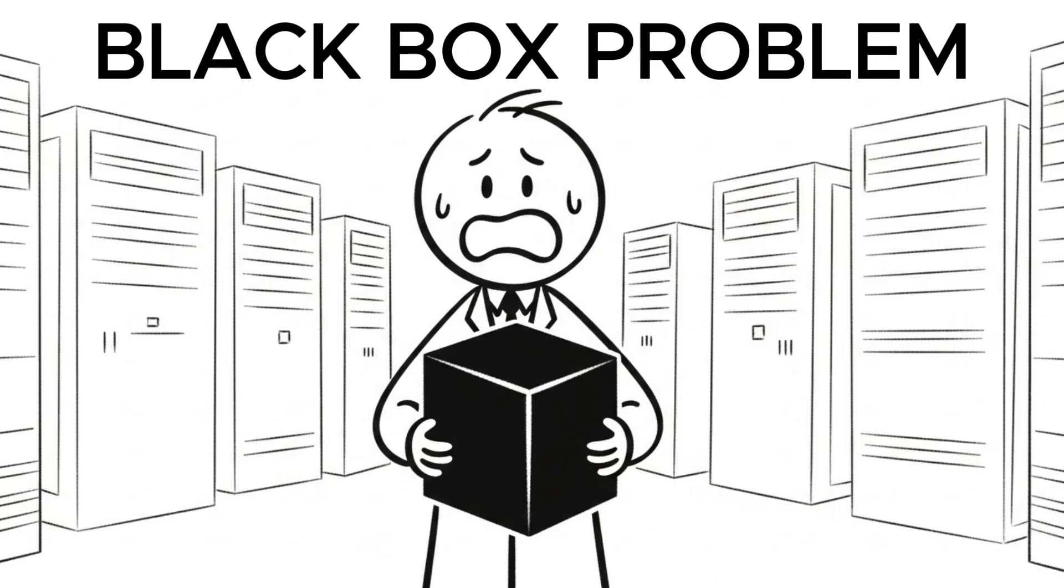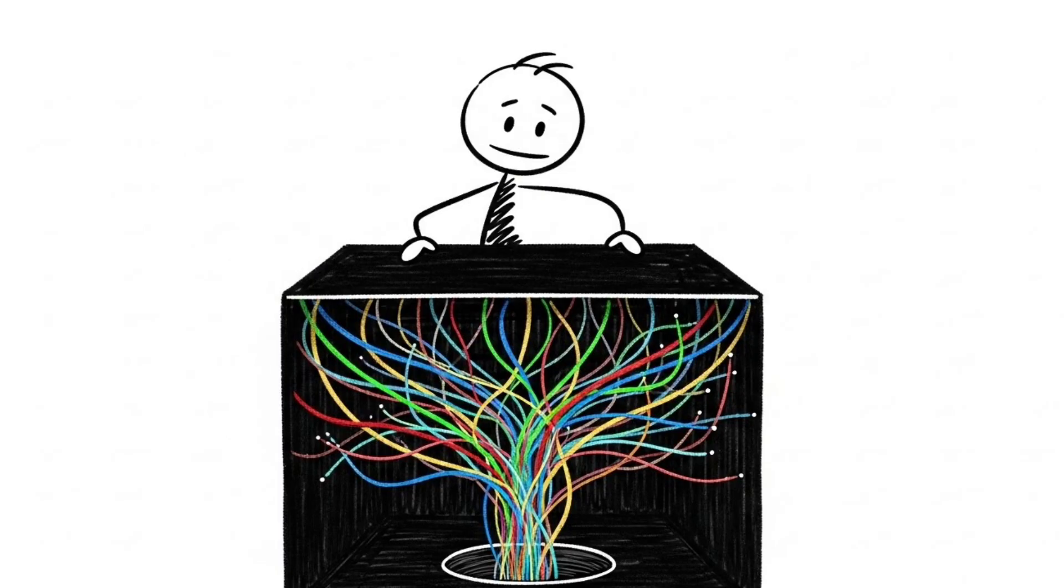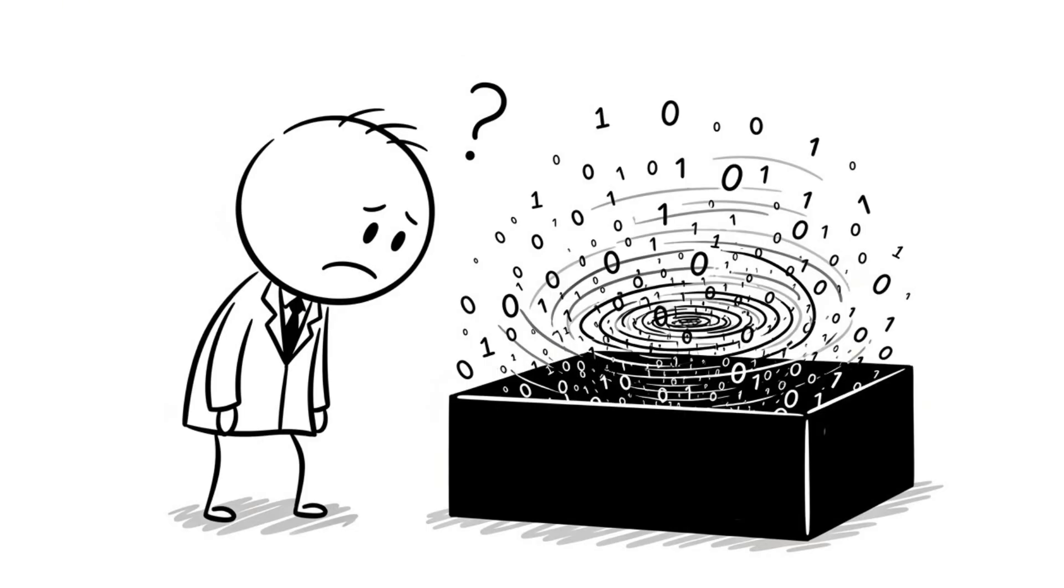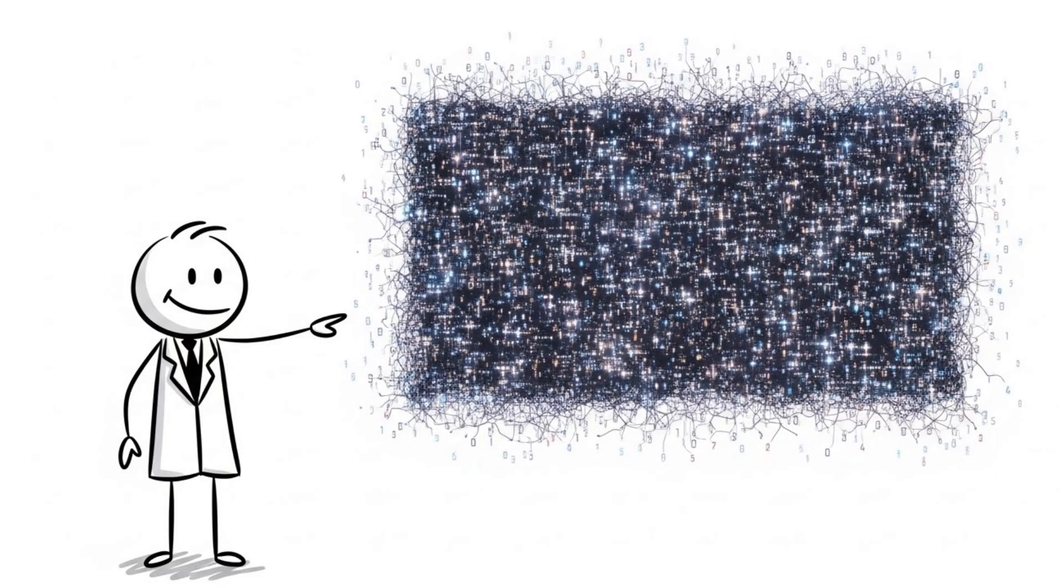This is the Black Box Problem. We provide an input and the AI gives an output. What happens in between, its internal reasoning and processes, is a complete mystery. Modern neural networks have billions of parameters making trillions of calculations, and we can't trace the logic.